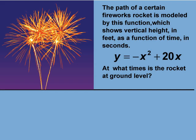The rocket is on the ground when the y value is zero. The equation we want to solve is this: negative x squared plus 20x equals zero.